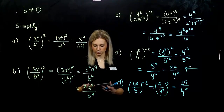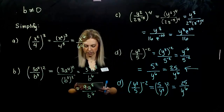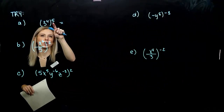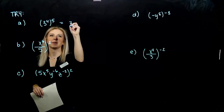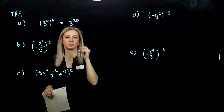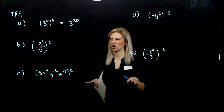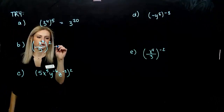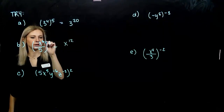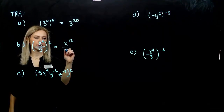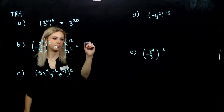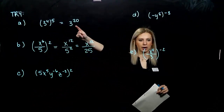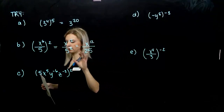Go ahead and simplify problems a through e on the next page, expressing answers with positive exponents. For part a, we're raising a power to a power, so we multiply: base is 3 raised to the 20th power — it's going to be really large, we don't need to evaluate it. For part b, it's a quotient, so I give the power to both top and bottom. Raising a power to a power, we multiply, giving x to the 12th over 25. Positive power — nothing needed to be moved around.